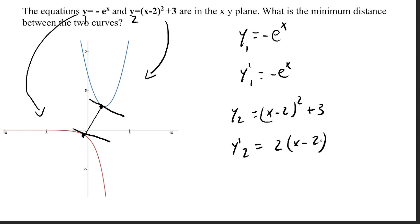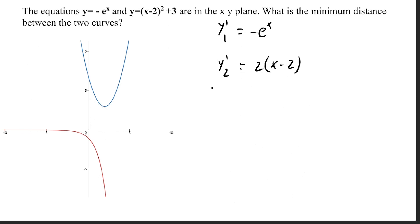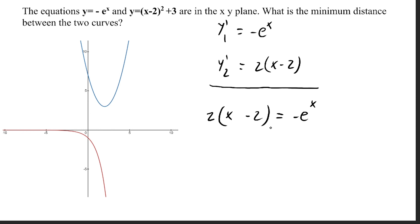Since the x values do not have to be equal, we introduce x1 and x2 to distinguish between them. Setting the two derivatives equal gives us 2 times x2 minus 2 equals negative e to the x1. Isolating for x2, this can be rewritten as x2 equals negative e to the x1 divided by 2 plus 2.